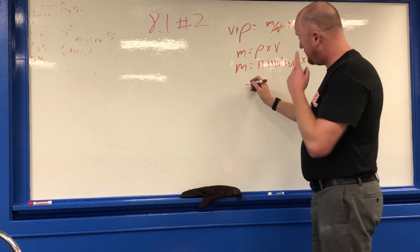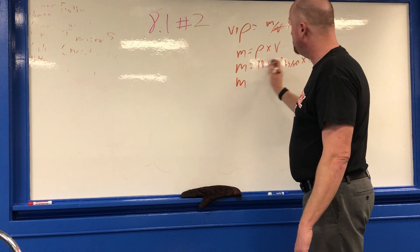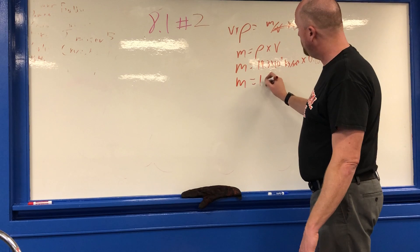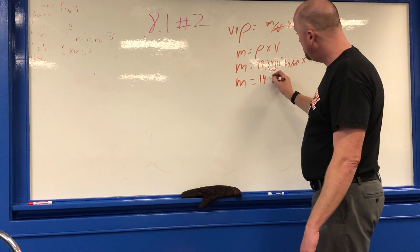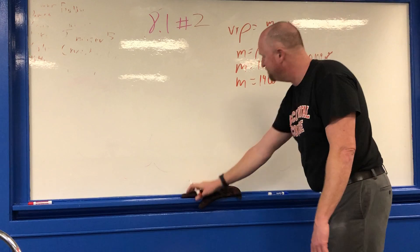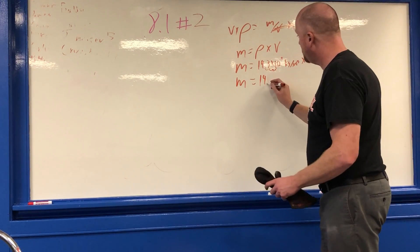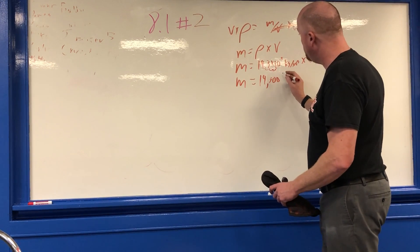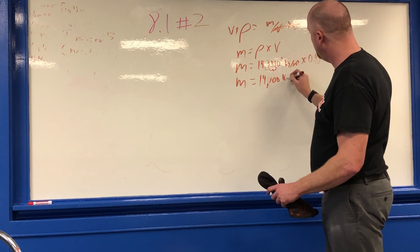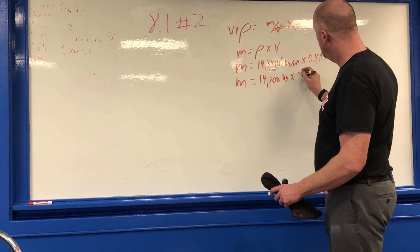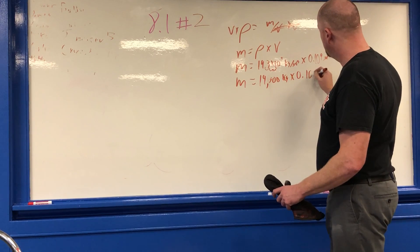19.3 times 10 to the positive third—I'm going to move the decimal point 1, 2, 3 places—equals 19,300 kilograms, times 0.109.